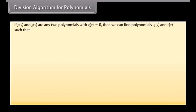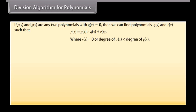Division algorithm for polynomials. If P(x) and G(x) are any two polynomials with G(x) not equal to zero, then we can find polynomials Q(x) and R(x) such that P(x) equals G(x) times Q(x) plus R(x), where R(x) equals 0 or the degree of R(x) is smaller than the degree of G(x).